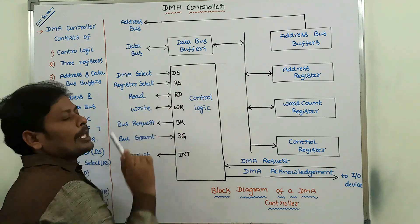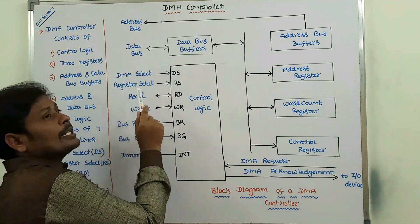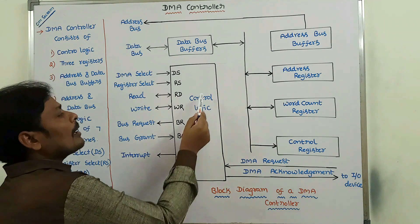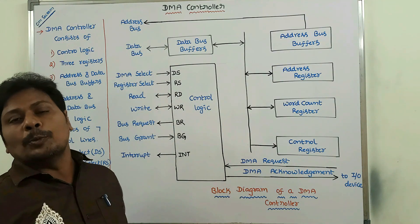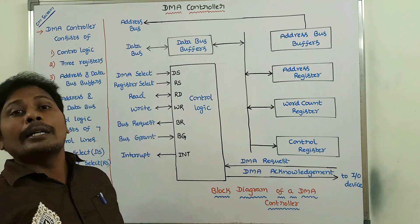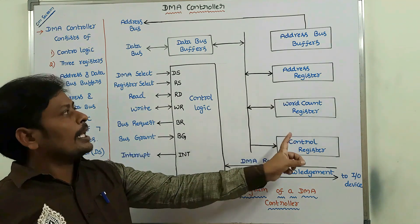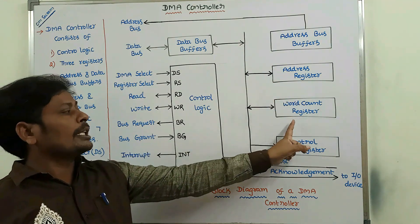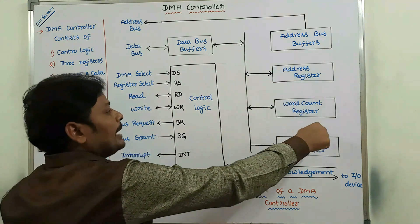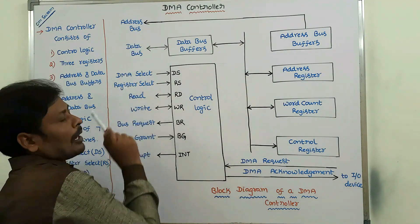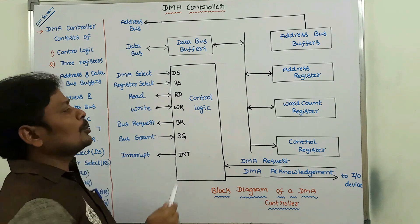The first two control lines — DMA select and register select — are the select input lines for the control logic. By using these two lines, the CPU will be able to enable the registers of the DMA controller. The three important registers in the DMA controller are: address register, word count register, and control register. The CPU enables these DMA registers using these two lines.